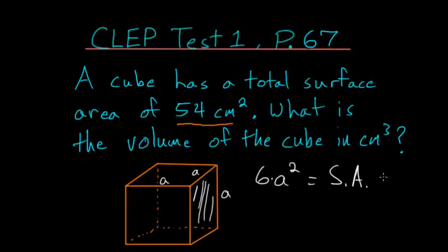And we know that our surface area is equal to 54. So to solve for one side of the cube or this A we just divide each side by six so that A squared is equal to nine.